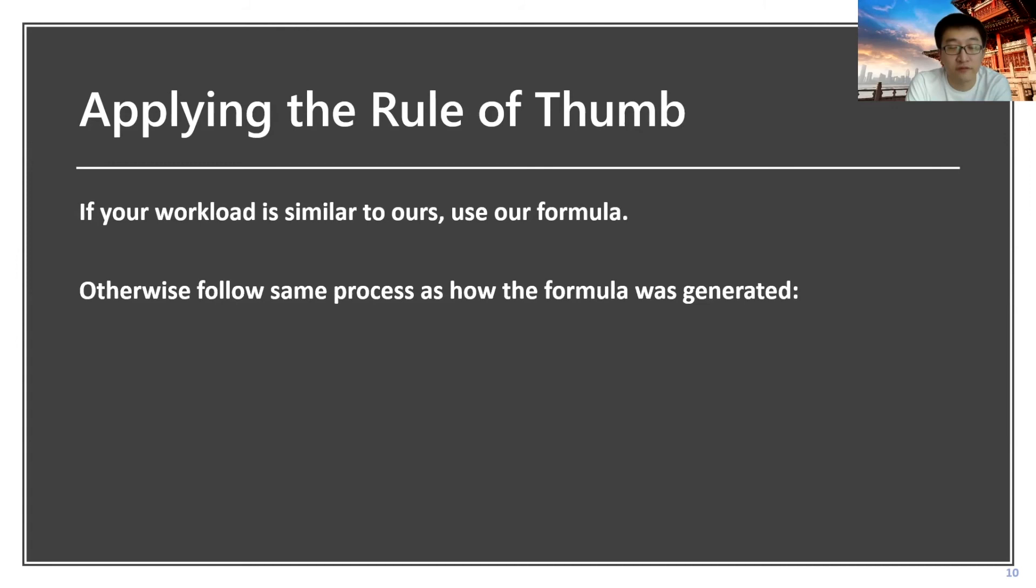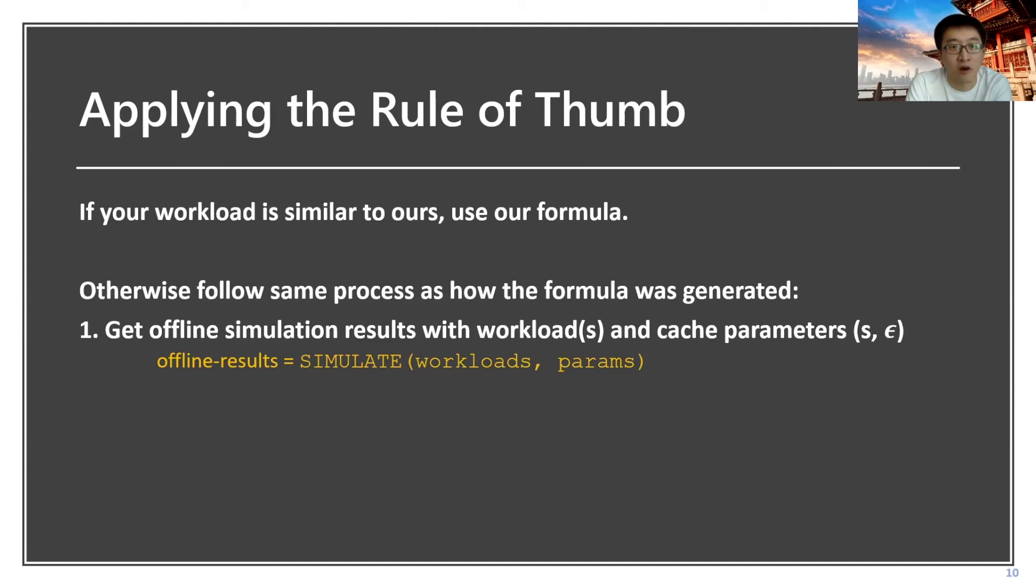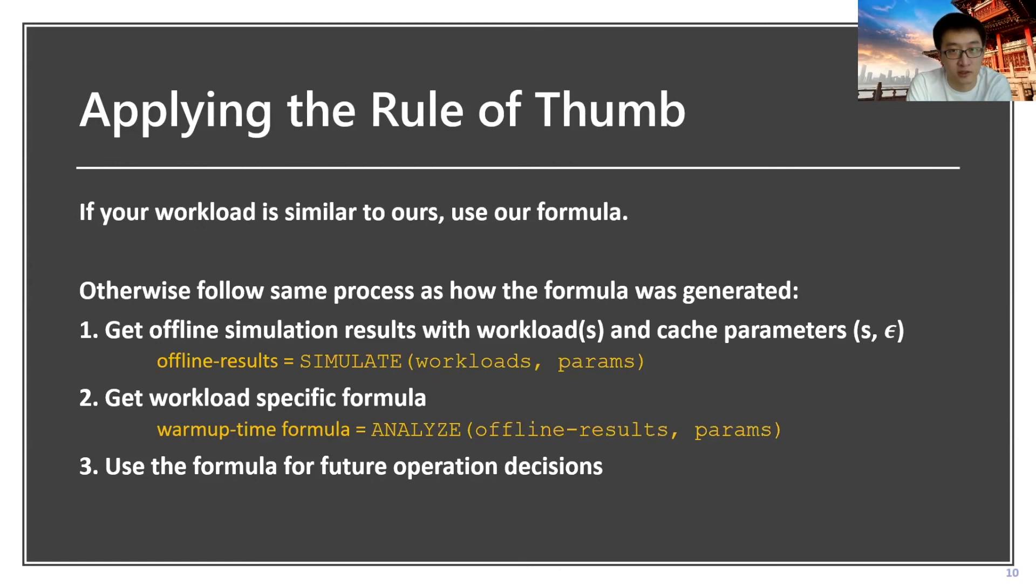However, if you have some different workloads, you can just process the rule of thumb by yourself as a similar process of generating the rule of thumb. First get the offline simulation result with your workloads and the cache parameters. With that, you can get the workload-specific formula as we discussed in the analysis part. Then with the formula, you can just use it for your future operation decisions.